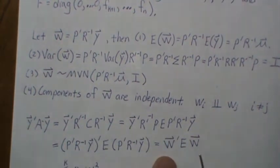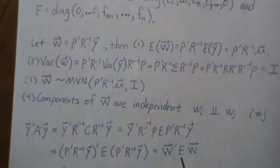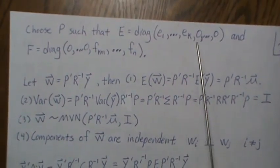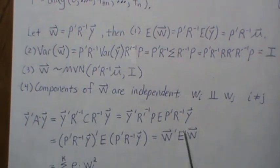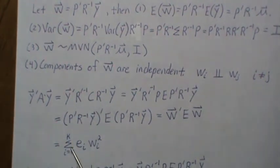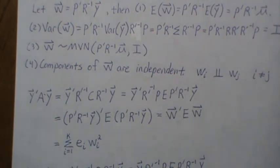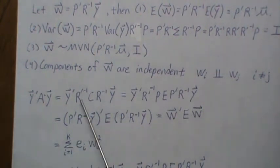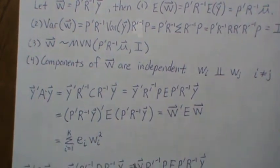So when we carry out this sum, we get this. From 1 to K, it's E_i W_i squared, because K plus one on these are zero. So this is the sum.